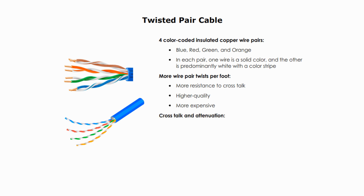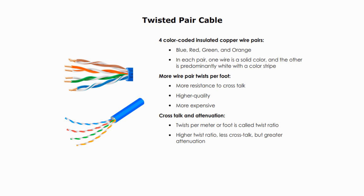Twists per meter or foot is called twist ratio. The higher the twist ratio, the less crosstalk, but the greater the attenuation. It is important to keep a balance between minimizing crosstalk and reducing attenuation.